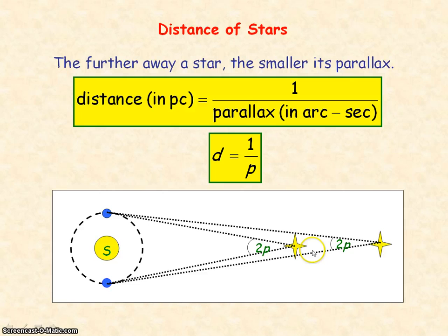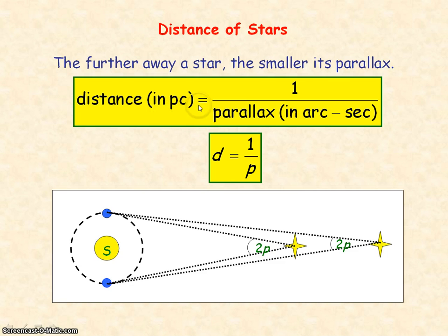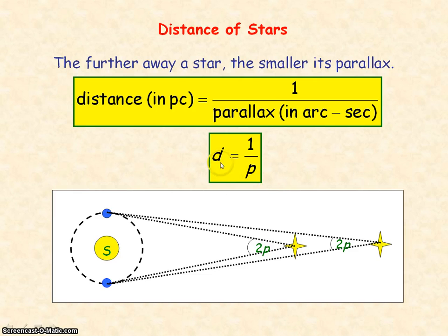The further away a star is from Earth, the smaller its parallax. So the distance the star is from Earth in parsecs is equal to 1 divided by the parallax in arc seconds. The symbol equation is d equals 1 divided by p, where p must be in arc seconds for d to be in parsecs.